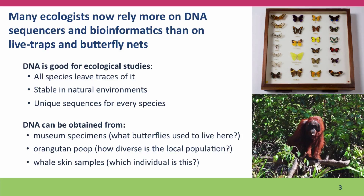Whale biologists have come to rely extensively on DNA typing extracted from whale skin samples. They collect these samples using a specially designed arrow fitted to a crossbow. The arrow has a small hollow dart on the tip that penetrates the whale skin and removes a plug about the size of a pencil eraser. The dart then falls off and floats so researchers can retrieve it with the DNA sample. This allows them to specifically identify individual members of whale populations.